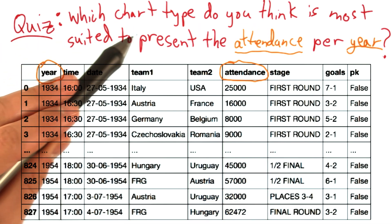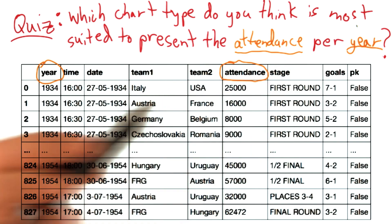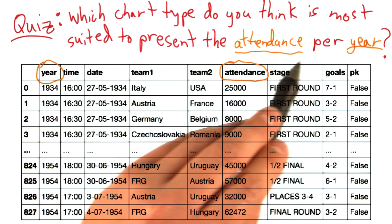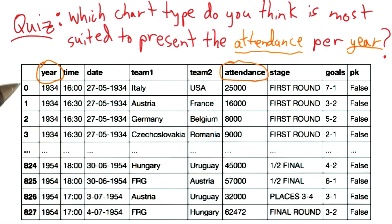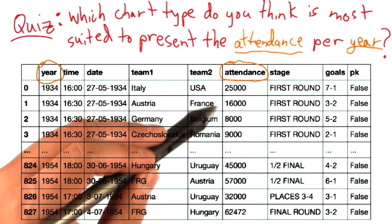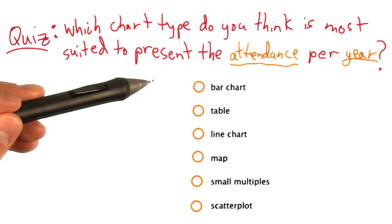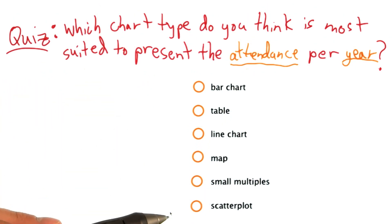Which chart type of the charts we've covered earlier in this lesson do you think is most suited to present the total attendance for a given year of the World Cup? In other words, you would aggregate all the rows of the games for the same year and sum up the attendance for every one of those games. Also think about why you would choose that chart. Please choose only one of the chart types below that you think best represents the data, and also think about why you've chosen that chart.